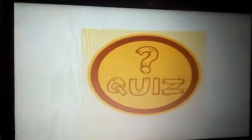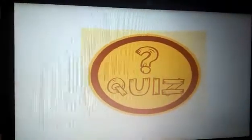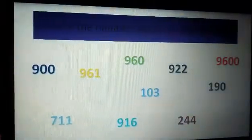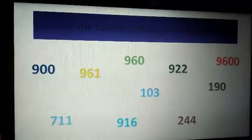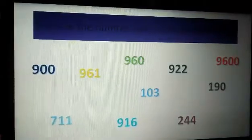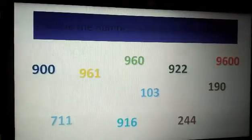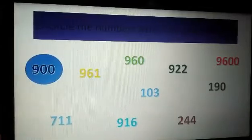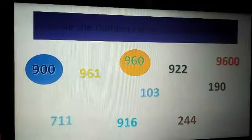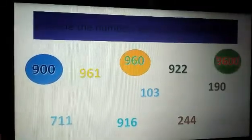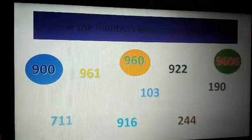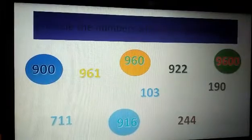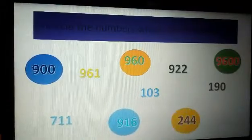Okay, I will give you 10 seconds to take our quiz. Encircle the numbers which are divisible by 4: First, 900; next, 960; next, 9,600; next, 916; and 244.